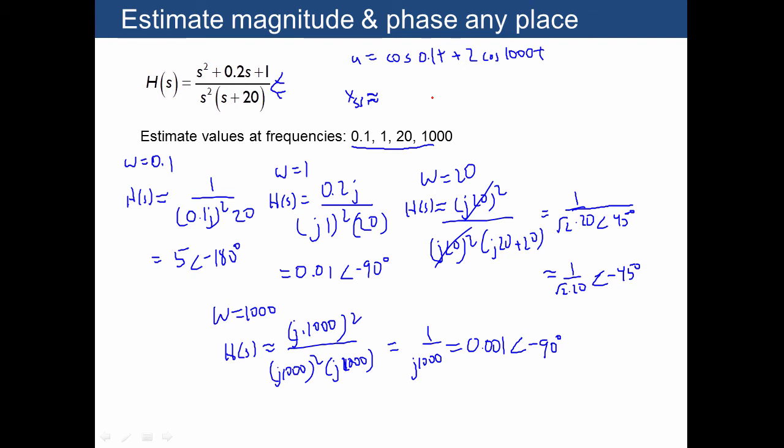For cosine 0.1t, I know that I have a magnitude of 5 and cosine of 0.1t minus 180 degrees. That's my steady state output for this part of the input. For the second part, I have cosine of 1,000t, so I need 0.001, although this is multiplied by 2, so I need 2 of those, times cosine of 1,000t with a phase of negative 90 degrees. Without using a calculator, I can already make a rough guess for the output for this input. This is for finding the steady state output for sinusoidal input.